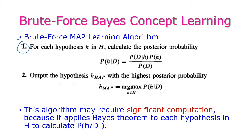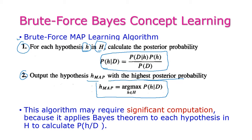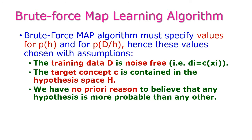In brute force Bayes concept learning, the first step is: for each hypothesis h in H, calculate the posterior probability using Bayes theorem. The second step is: output the hypothesis H_MAP with the highest posterior probability, that is H_MAP = argmax over h in H of P(H|D). This algorithm may require significant computations because it applies Bayes theorem to each hypothesis in H to calculate P(H|D). We need to specify the values of P(H) and P(D|H), and using these two values we find H_MAP.